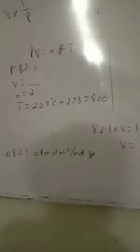The formula is 82.1. It will be 2 moles. It will be 500.